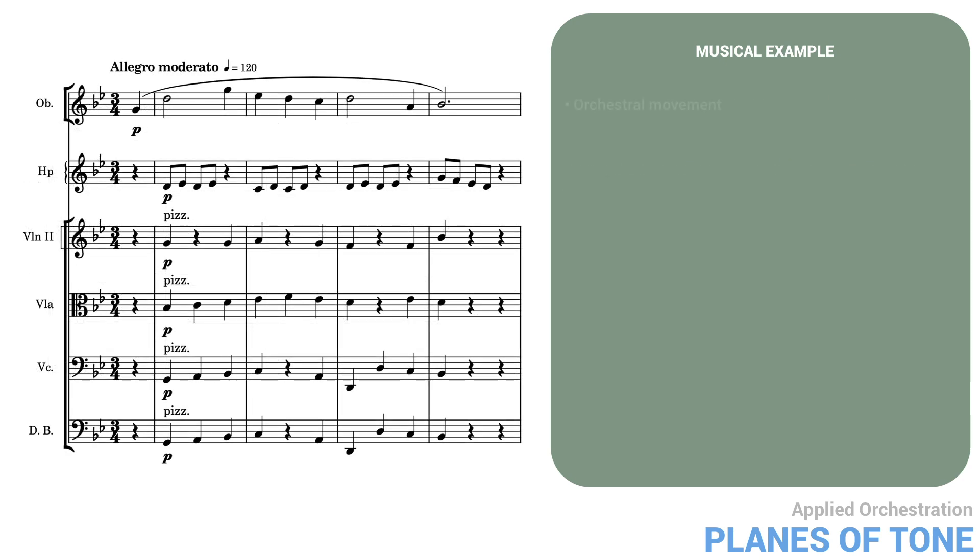In our last lesson, we introduced the idea of orchestral movement. Here's another version of our little example, now with added movement in the harp.